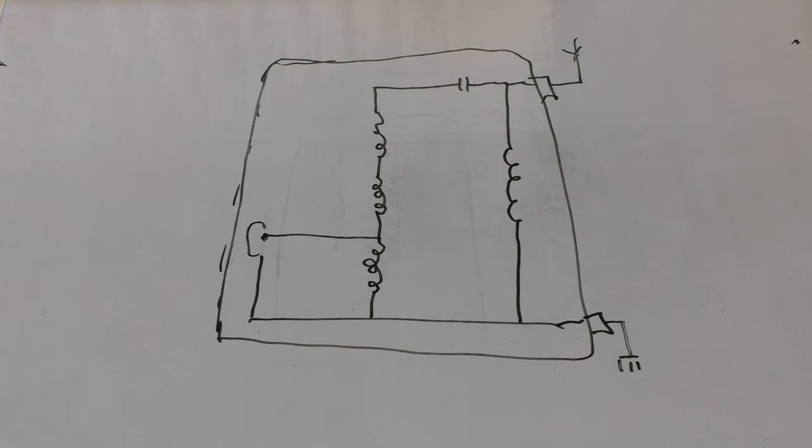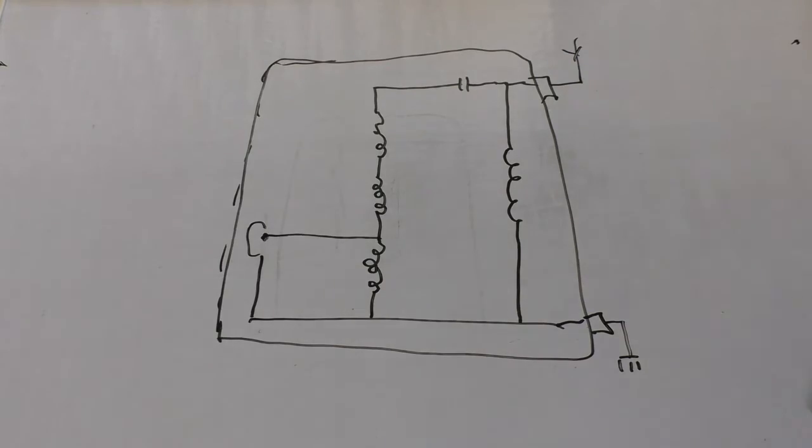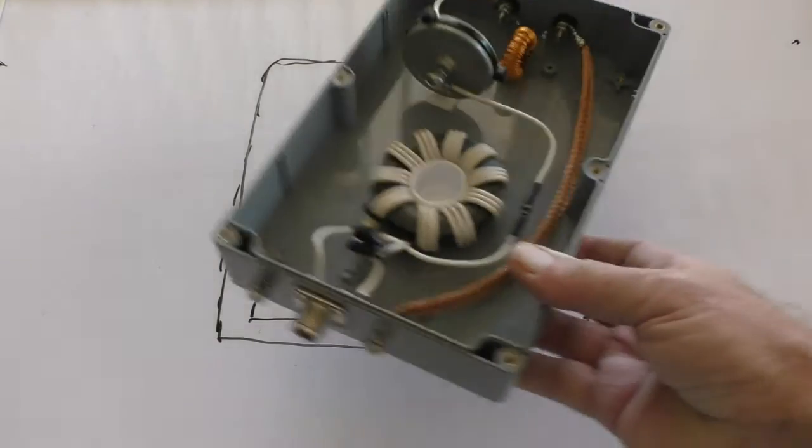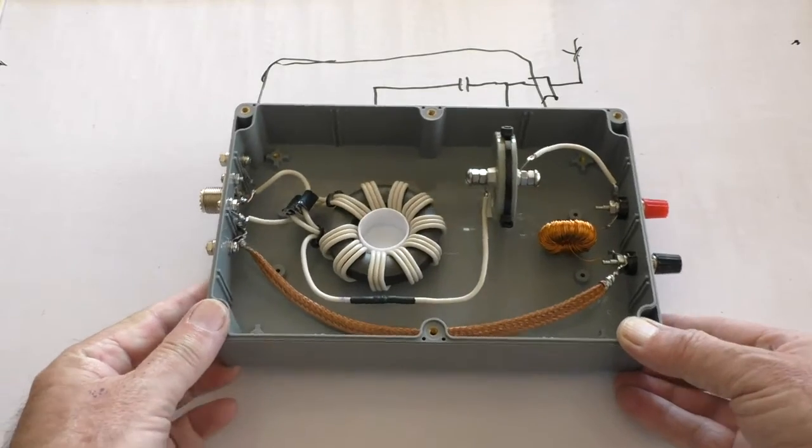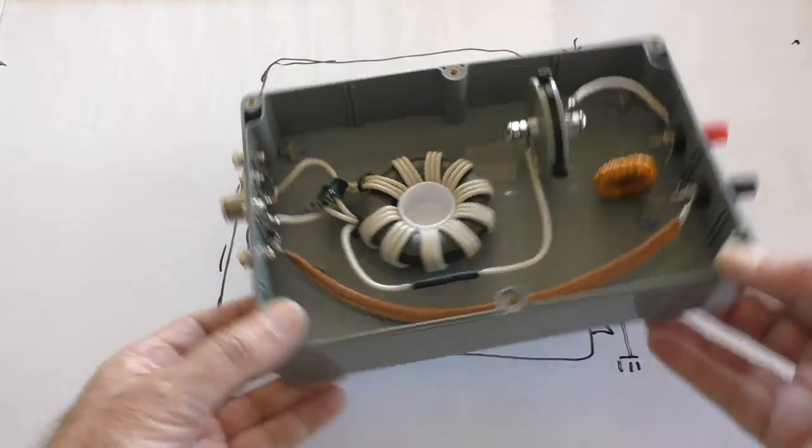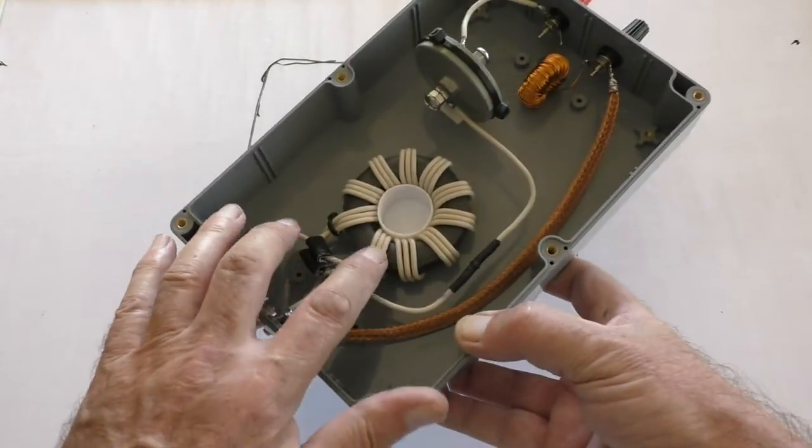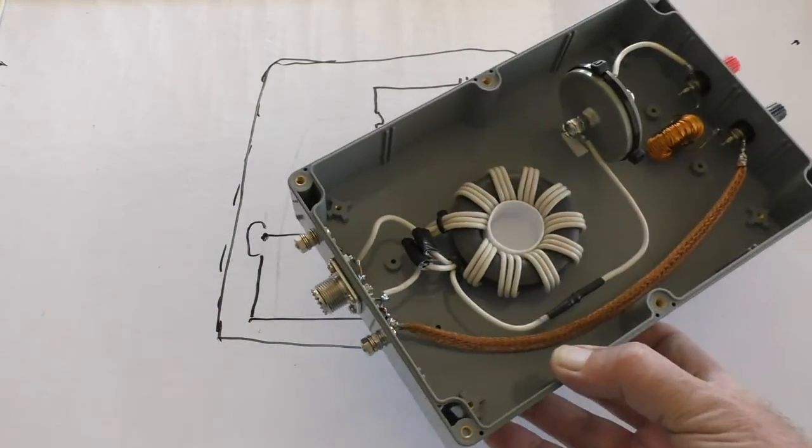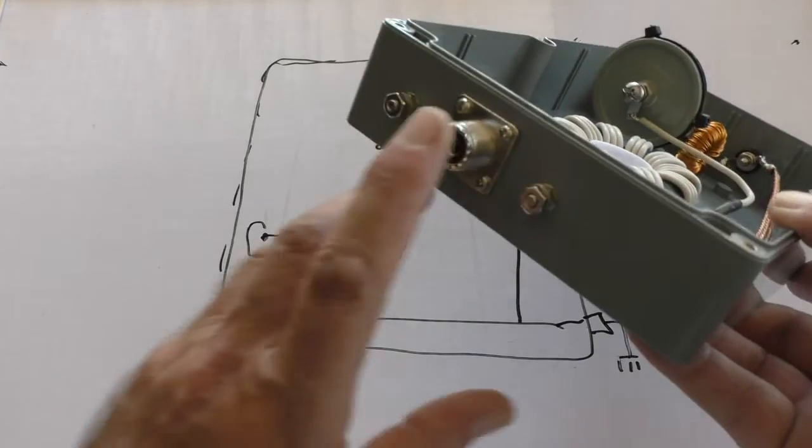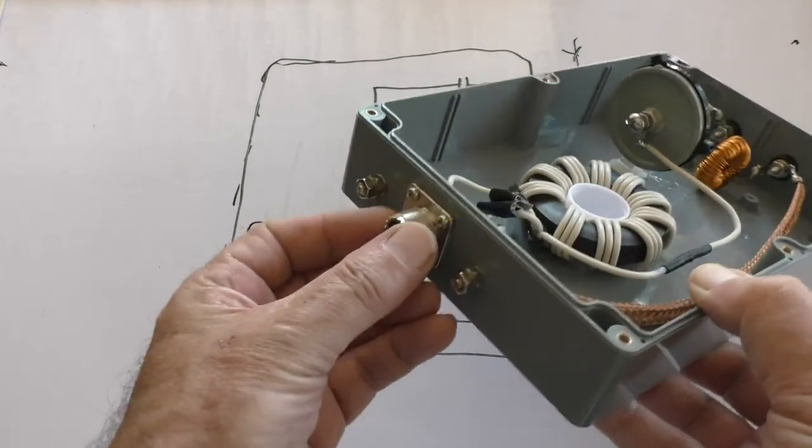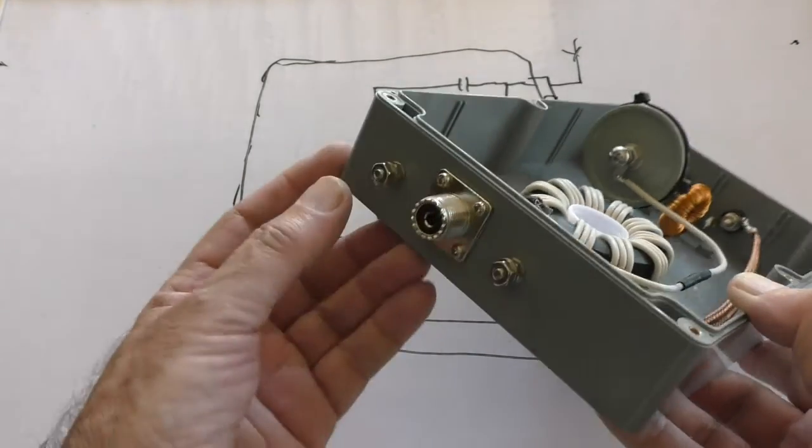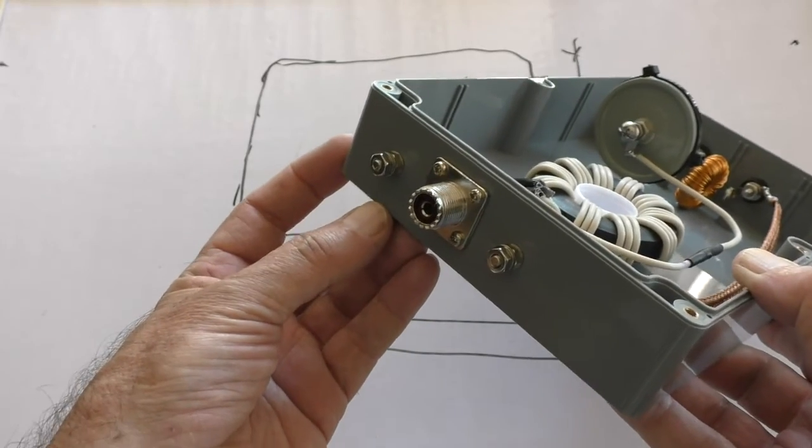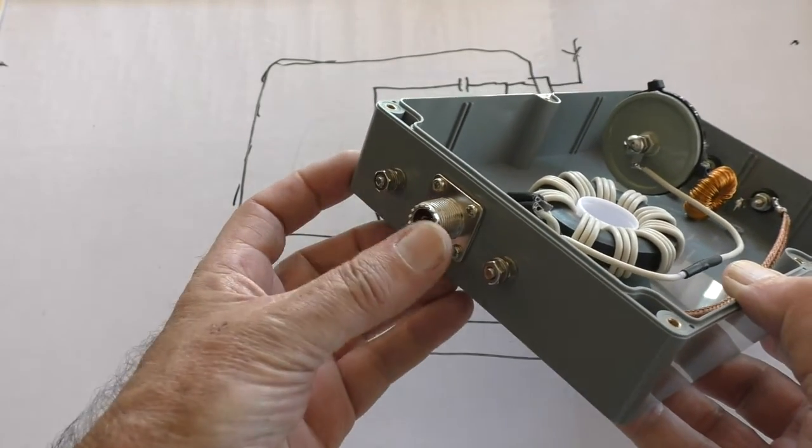So this is what it actually looks like. There we go. So I bought a plastic box and I stuck the unun in there. This is the 9 to 1 unun that I showed you on a previous video. And what I've done here is there's the socket so it can be connected directly to the coax, or if I want to connect it to the output of an automatic ATU, there's the two studs there.